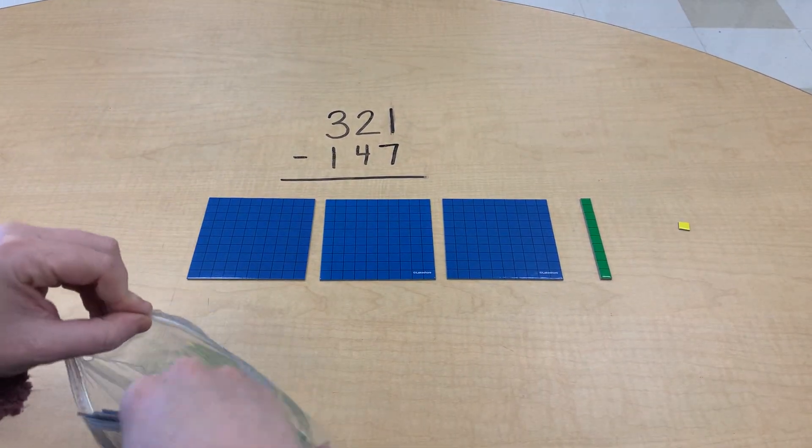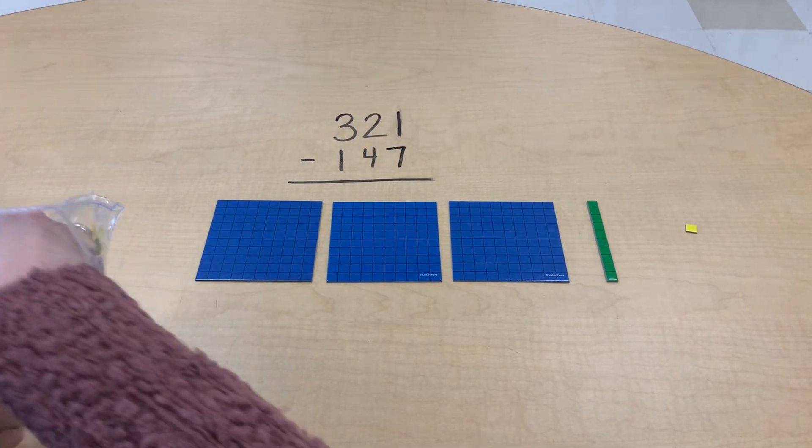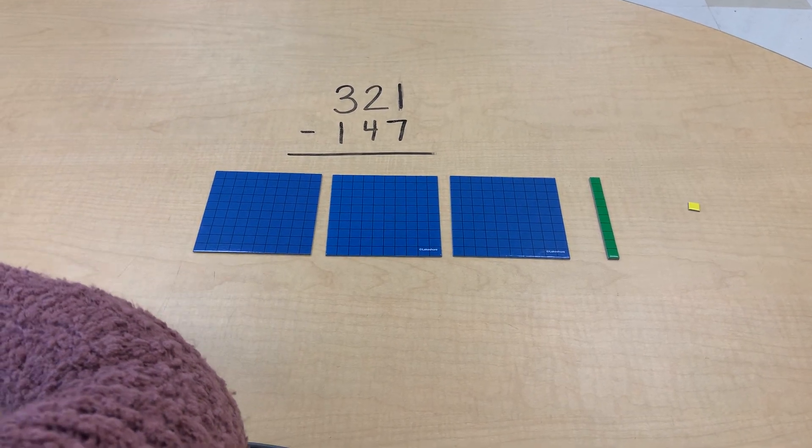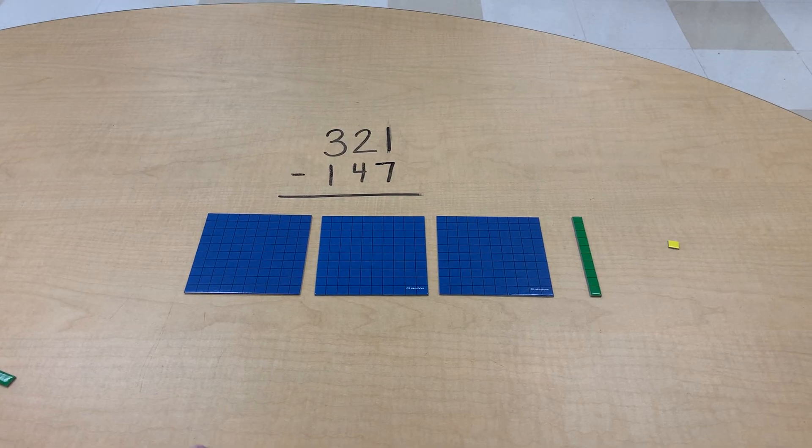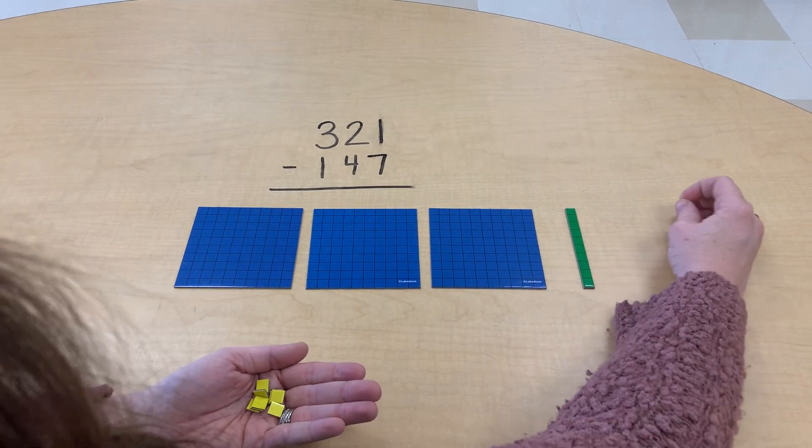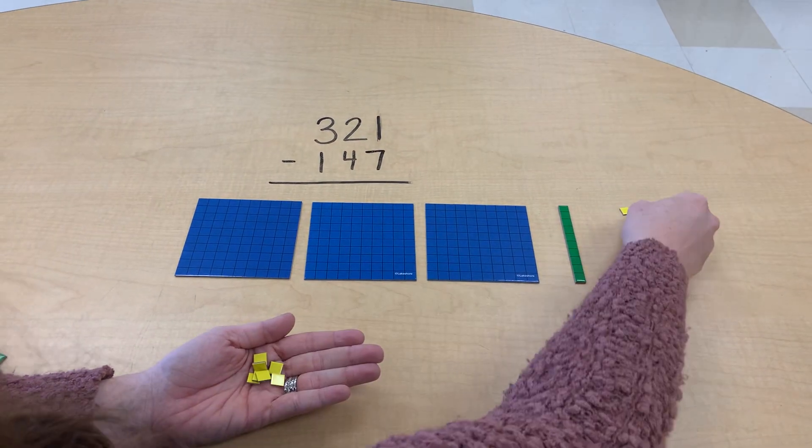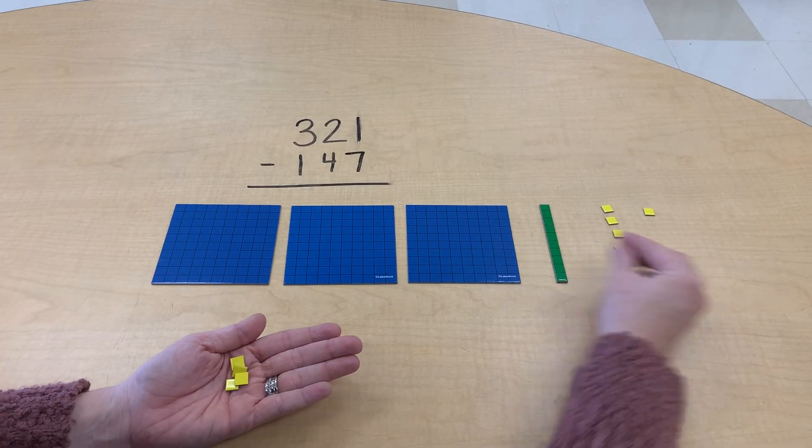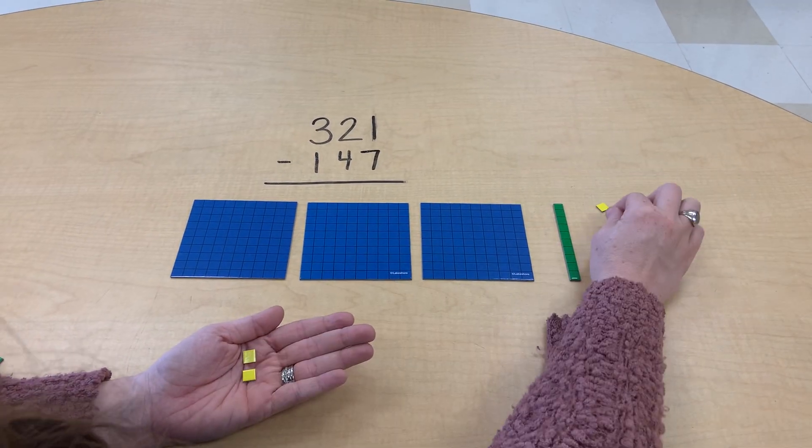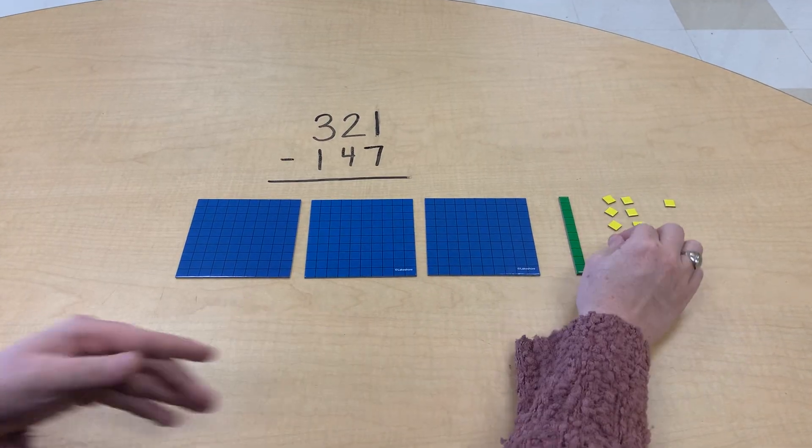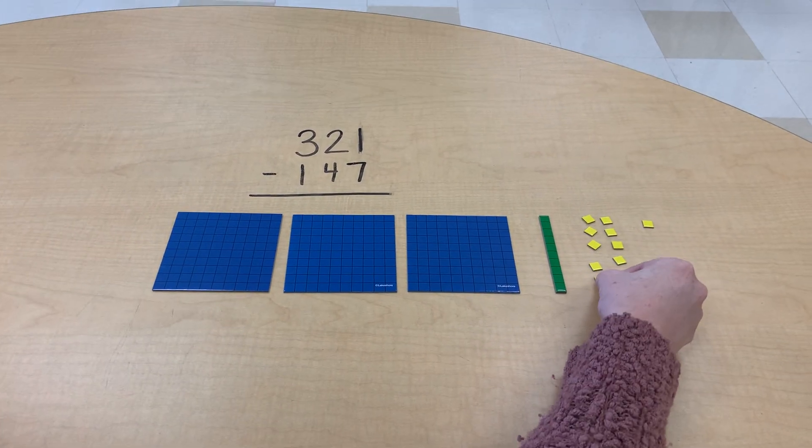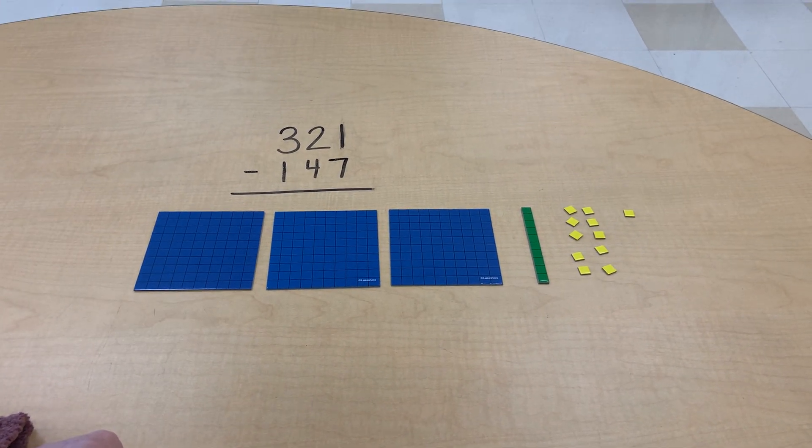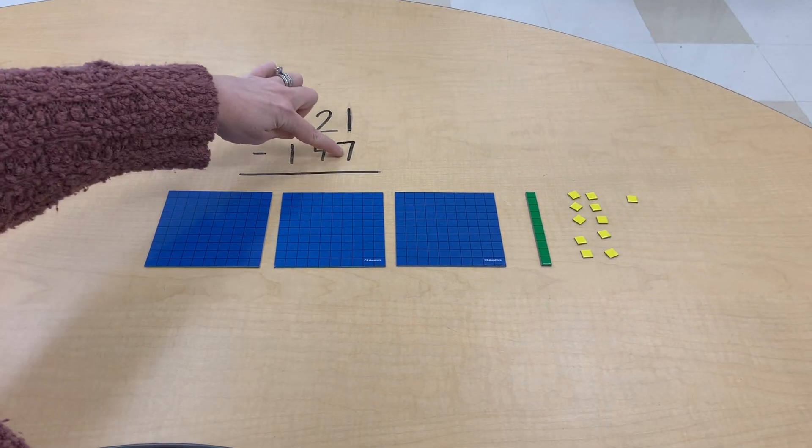I'm going to put my ten rods away and I'm going to break that up into ten ones. Get these ones ready. So that way I can take away seven and I still have the same amount. One, two, three, four, five, six, seven, eight, nine, ten. So I still have the number 321 here, even though I've regrouped. So now I can take away my seven.